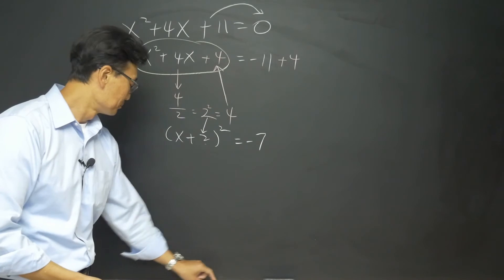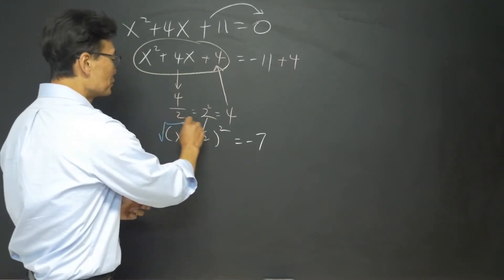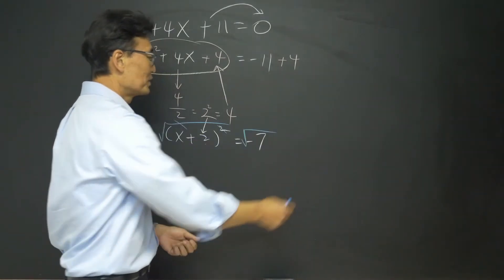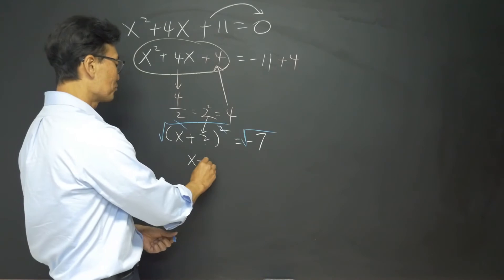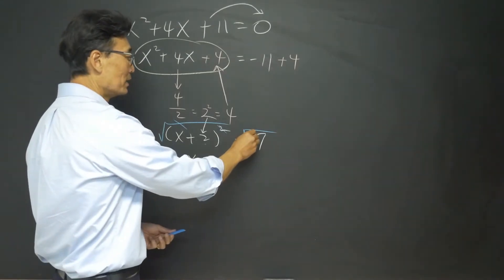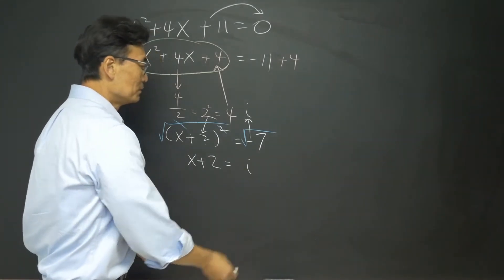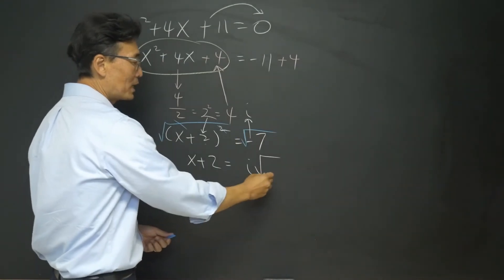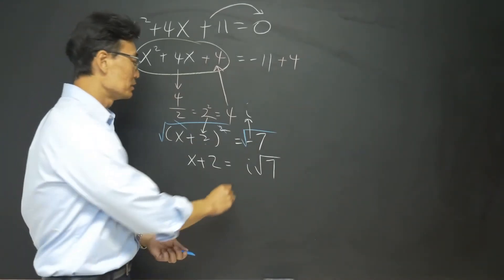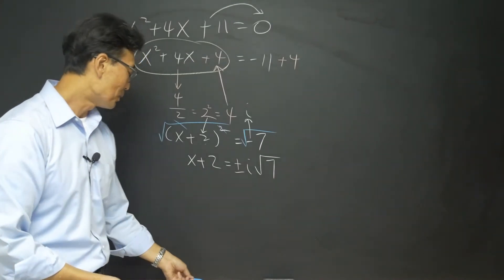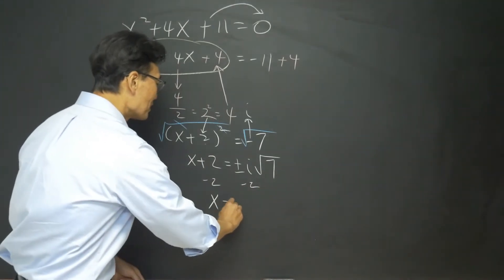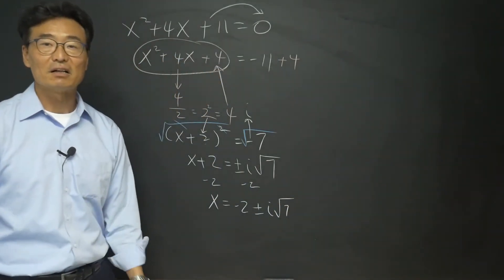Once we have something that is squared, to get rid of that square sign we take the square root. If we take the square root on the left side, we have to take the square root on the right side as well. On the left side we have x plus 2. On the right side — as we learned in the imaginary or complex number section — the negative comes out and turns into an i. So we get i times the square root of 7, since the negative sign became an i and we only have 7 left inside. Don't forget, whenever you take the square root of both sides, it's always plus or minus. Then simply subtract 2 from both sides to isolate x, giving us x equals negative 2 plus or minus i root 7.